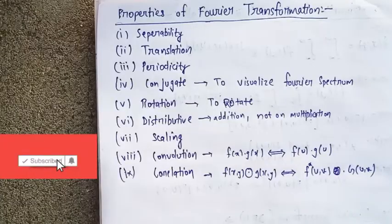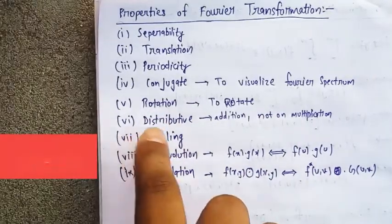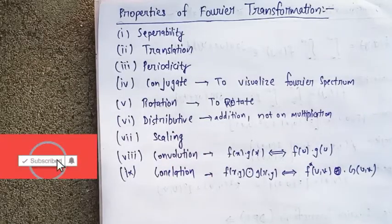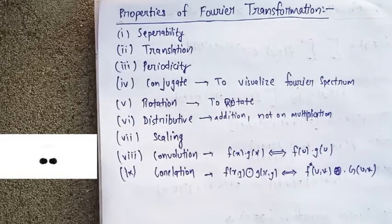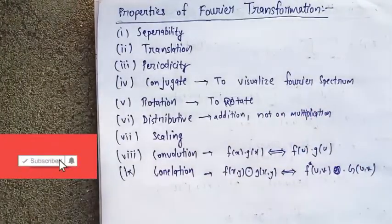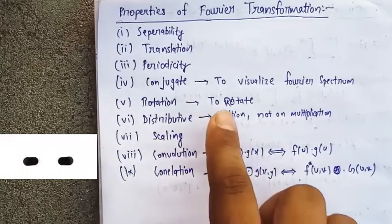In rotation, to rotate simply. Distributive, which means if I add two Fourier transformations, I will get the addition of this. But in multiplication it will not work. There's a little disadvantage that we can't multiply two Fouriers. But addition will work.